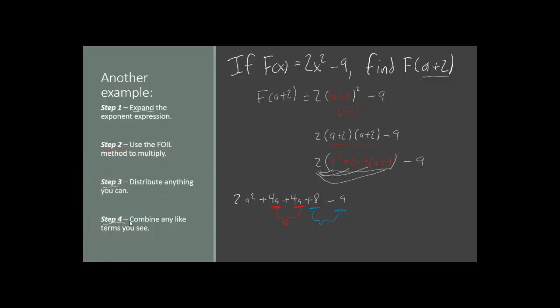So let's do our last bit of arithmetic. Our 2a² can't be combined with anything, so it is still 2a². Plus 4a plus 4a gives us 8a. And then positive 8 minus 9 gives us minus 1. And this is our final answer.